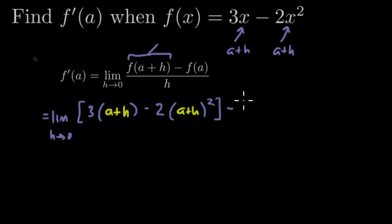And then you've got minus and then f of a. f of a is just going to be 3a minus 2a squared. And all of this is going to be over h.